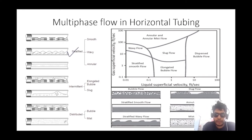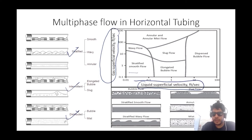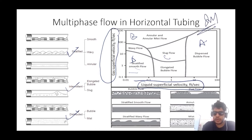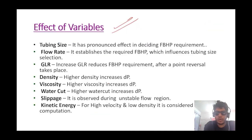For multiphase flow in horizontal tubing, the flow regimes include stratified, intermittent, and distributed (annular/dispersed) flow. A very important graph plots gas superficial velocity versus liquid velocity for horizontal tubing, and the concept of mapping flow regions on this graph is important for examination purposes, such as match-the-following questions in the GATE examination.